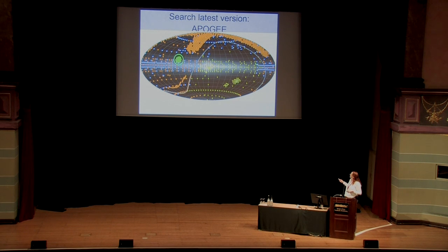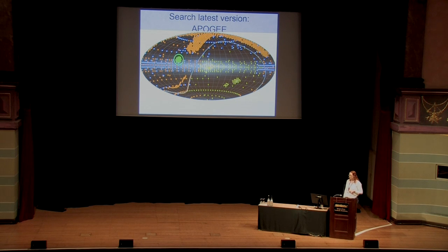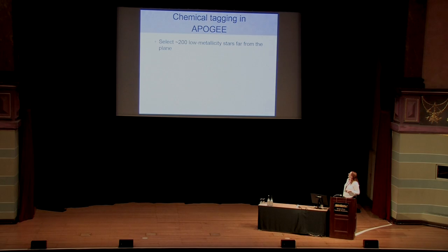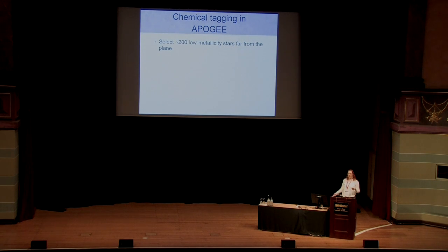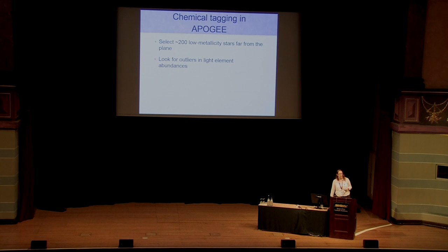APOGEE can go right through the plane of the Milky Way and will be amazingly important for understanding disk structure. They also spend a lot of time in the halo, making it a great dataset for understanding halo assembly. We grabbed about 200 halo red giants from the dataset and looked for stars in the part of light element abundance space where cluster stars live but field stars don't.